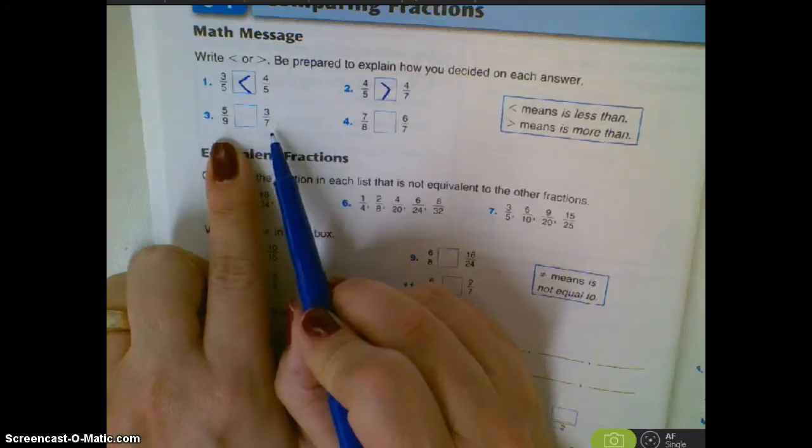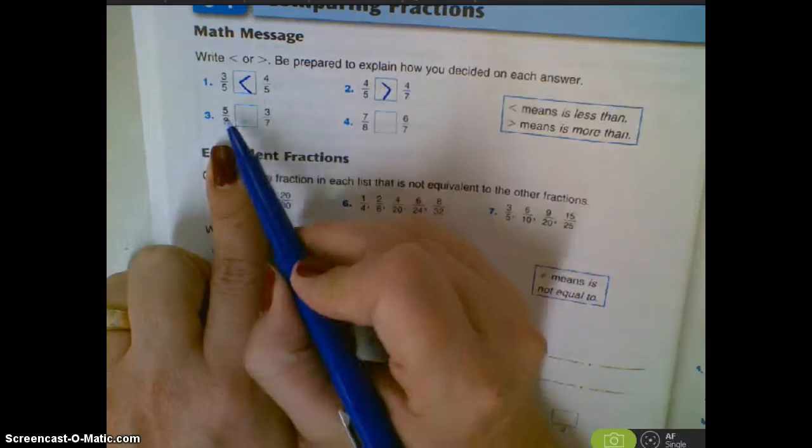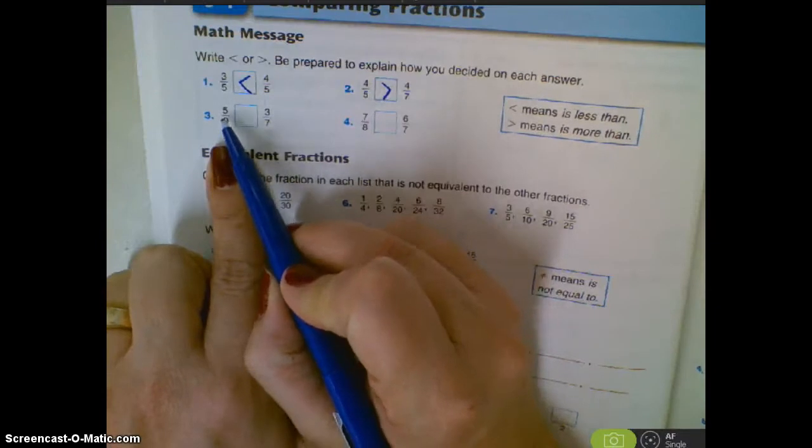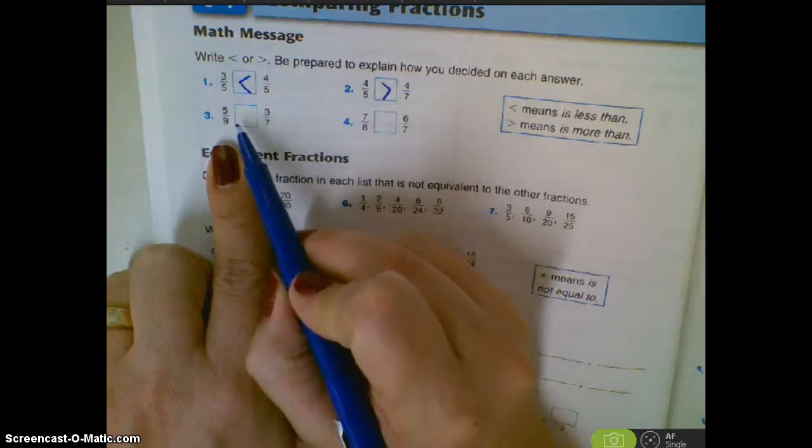Again, we have uncommon denominators, and we're going to say which one is more or less than half. Half of nine would be 4.5, so we know that that's more than half.